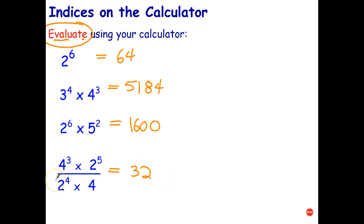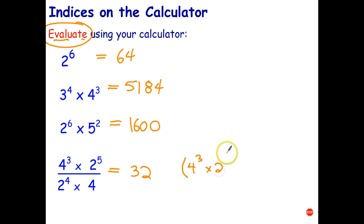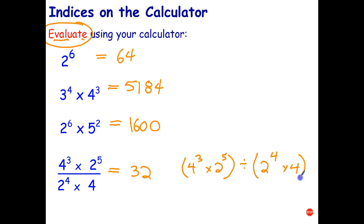If you don't have a fraction button on your calculator, you need to use brackets when dividing — sometimes if you don't use brackets you get the wrong answer. So type: open bracket, 4 cubed times 2 to the fifth, close bracket, divided by, open bracket, 2 to the fourth times 4, close bracket. If you type that into your calculator using the divide symbol instead of the fraction bar, you should get the same answer of 32. We'll leave it there and move on to the next video.